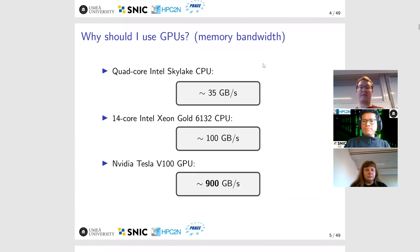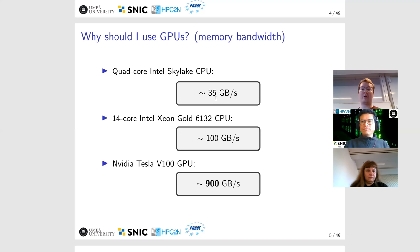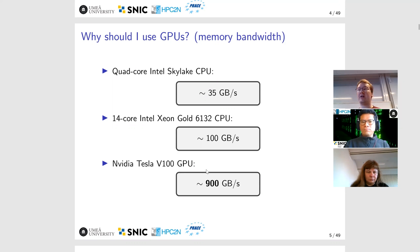If we look at memory bandwidth, for the quad-core CPU, assuming it has two memory channels, you would get around 35 gigabytes per second, which depends on the amount of memory in the machine. For the Xeon CPUs in Keplner-Kaiser, it's around 100 gigabytes per second. And what NVIDIA has promised for the V100 is 900 gigabytes per second — almost a factor of 10 improvement in memory bandwidth.